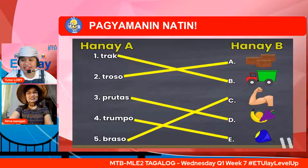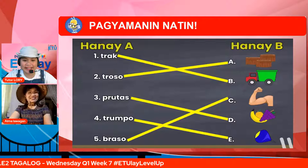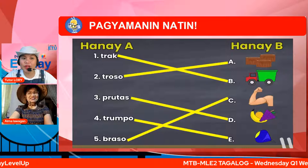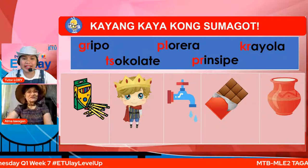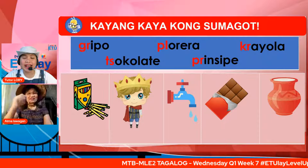Upang patuloy namin kayong paunlarin — dahil napagyaman ninyo ang inyong kaalaman ngayon, kayang-kaya niyong sagutin ang susunod. Tignan nating mabuti ang mga larawan at ang mga salita na nakasulat sa kahon. Para sa unang larawan, ito ba ay Gripo, Florera, Crayola, Chocolate, o Principe? Ano ang iyong sagot?